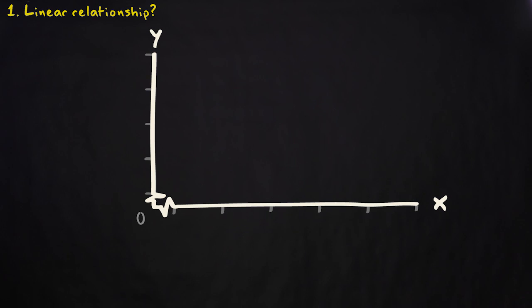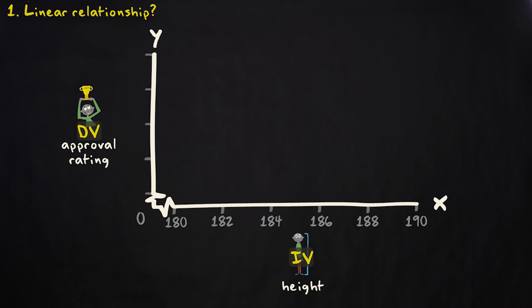So, the independent variable height goes on the x-axis, and the dependent variable approval rating on the y-axis. Based on the minimum and maximum values of our variables, we scale our axes. Our independent variable height ranges from 182 cm to 188 cm. We therefore use a scale from 180 to 190 cm.